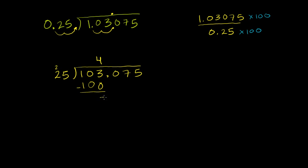103 minus 100 is going to be 3. And now we can bring down this 0. So we bring down that 0 there. 25 goes into 30 one time. And if we want, we can immediately put this decimal here. We don't have to wait until the end of the problem. This decimal sits right in that place.